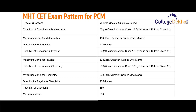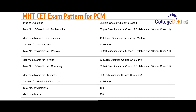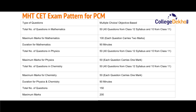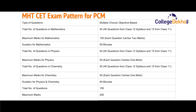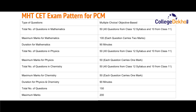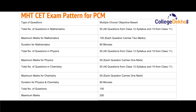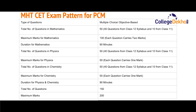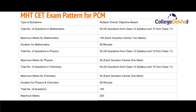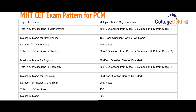Similarly, there will be 50 questions in Physics, out of which 40 questions will be from the Class 12 syllabus and 10 from Class 11. The maximum marks for Physics will be 50, with each question carrying one mark. The total number of questions in Chemistry will also be 50, out of which 40 will be from the Class 12 syllabus and 10 from Class 11. The maximum marks for Chemistry will be 50, each question carrying one mark. The duration for Physics and Chemistry will be 90 minutes. There will be a total of 150 questions for the PCM group, with maximum marks of 200.